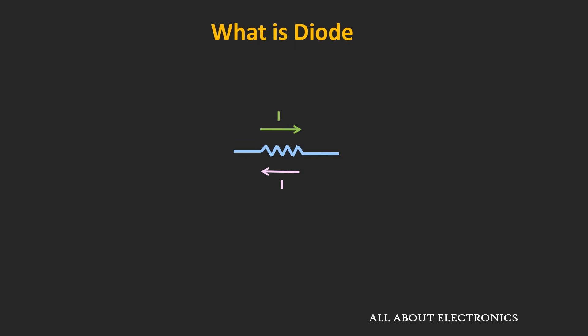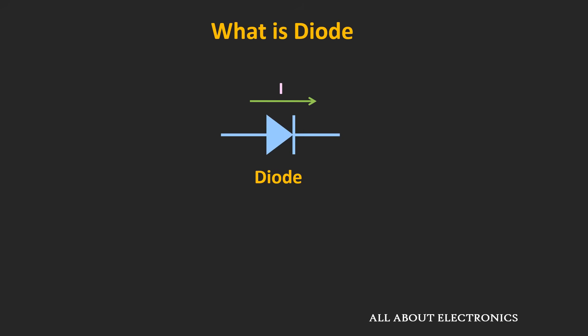We all know about the resistor — it is the most widely used type of passive circuit element, and it allows the flow of current in both directions. Similarly, this diode is a two-terminal semiconductor device which allows the flow of current only in one direction.